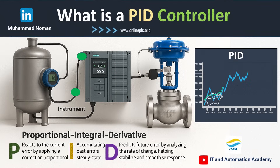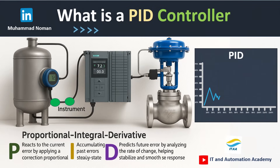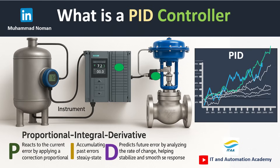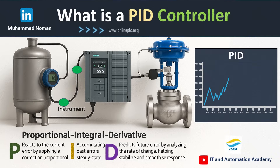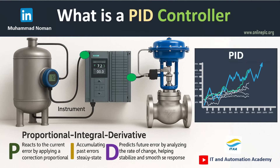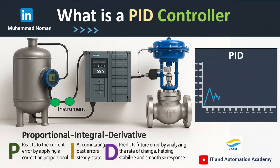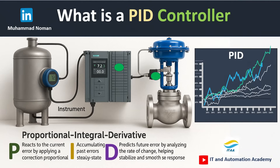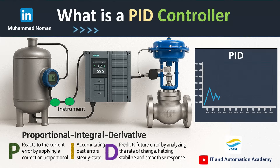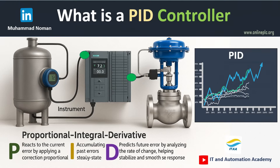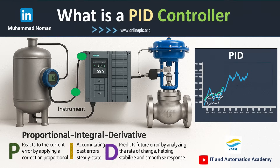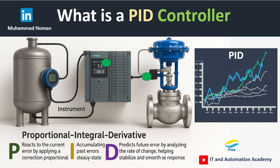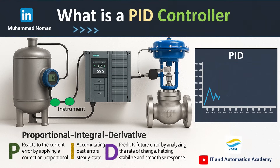Manual tuning. Step 1: Set I and D to 0 and start with P only. Step 2: Increase P slowly until the output oscillates — that's your ultimate gain. Step 3: Measure the oscillation period. Step 4: Use Ziegler-Nichols formulas to set P, I, and D values for smooth control.